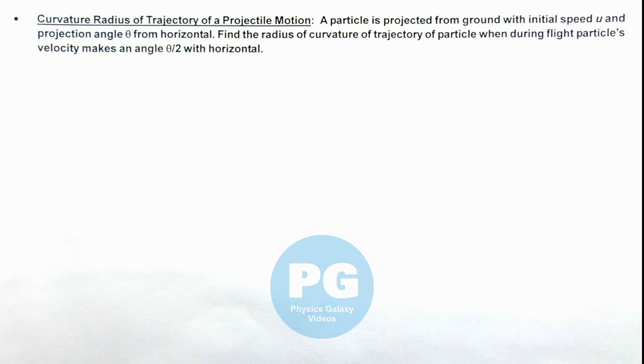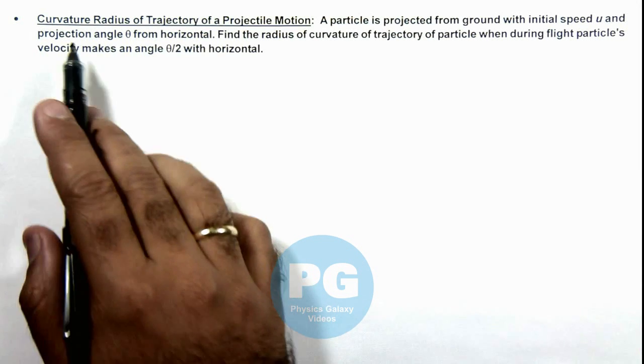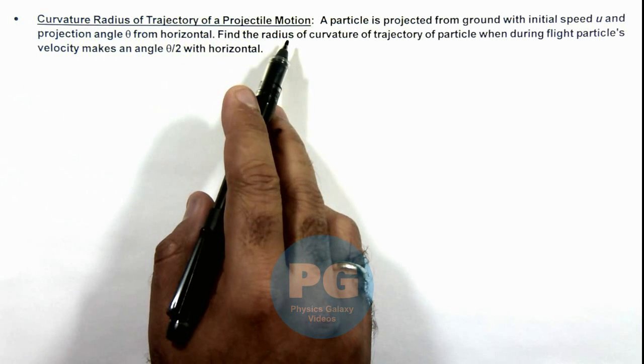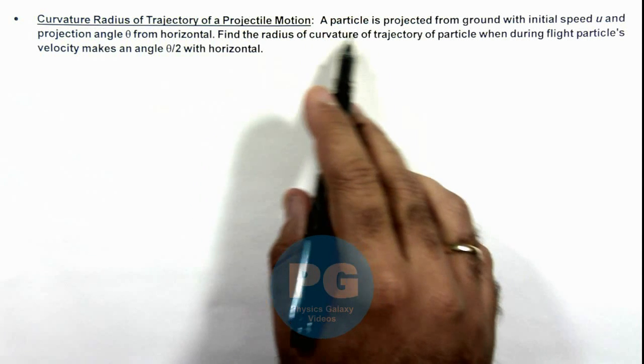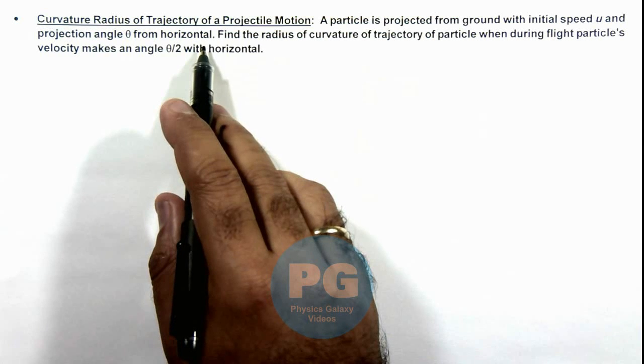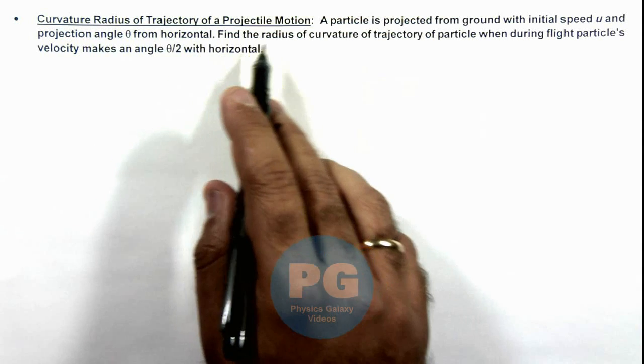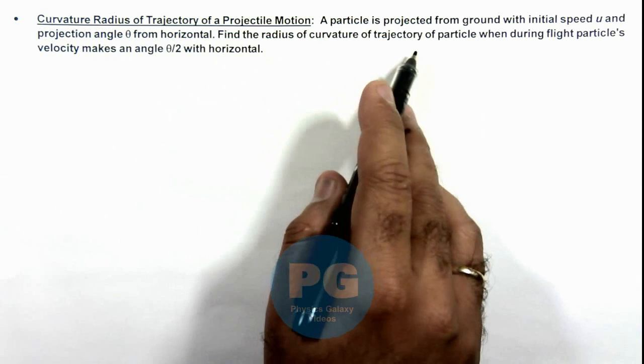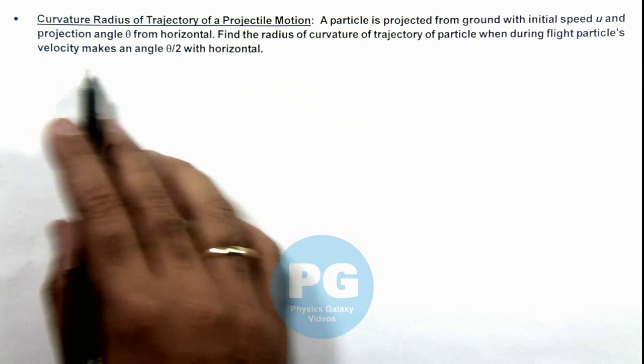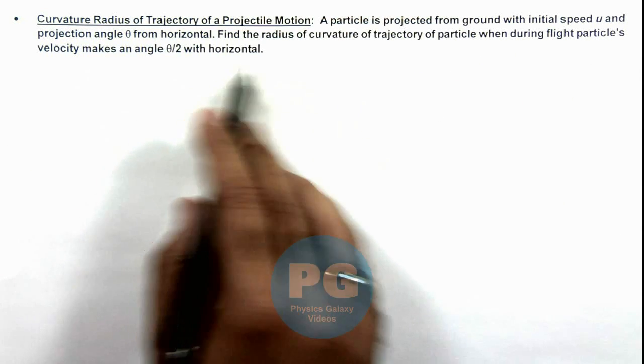Here in this illustration, we'll study about the curvature radius of trajectory of a projectile motion. We are given that a particle is projected from ground with initial speed u and projection angle θ from horizontal, and we are required to find the radius of curvature of trajectory of particle when during flight particle's velocity makes an angle θ/2 with the horizontal.